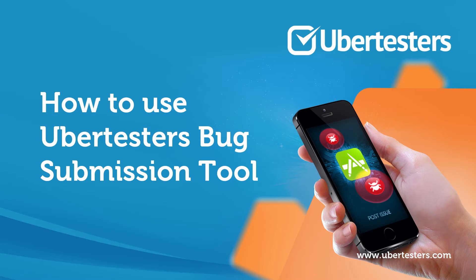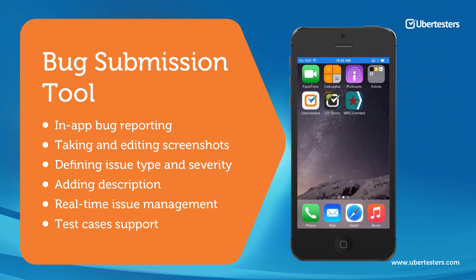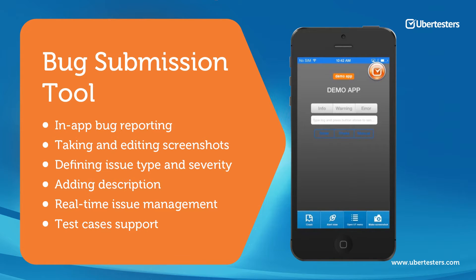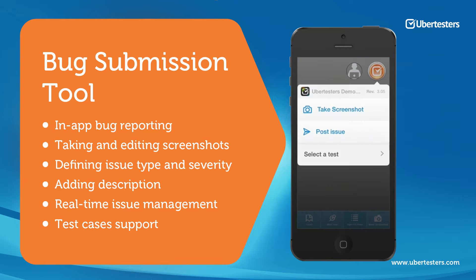The following video will demonstrate how to submit bugs right from a mobile device and from within the app. Once you have integrated a build with our SDK installed on a device, launch the app and you can see the UberTester button. You can start the bug submission by clicking the UberTester button to take a screenshot.